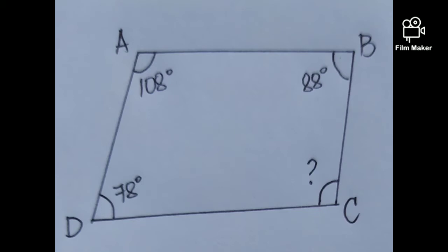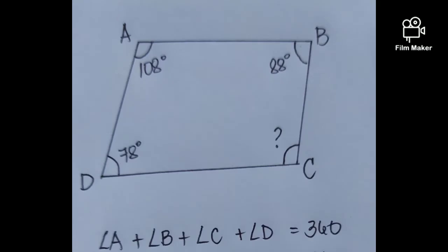In order for us to find the measure of the unknown, which is angle C, we will apply the third property of a quadrilateral. Since we know that all the interior angles of the quadrilateral are equal to 360, we just add all the angles.